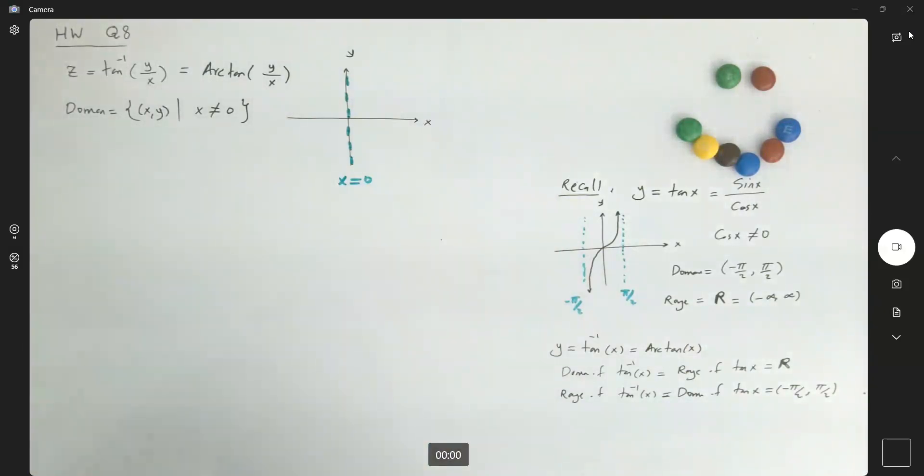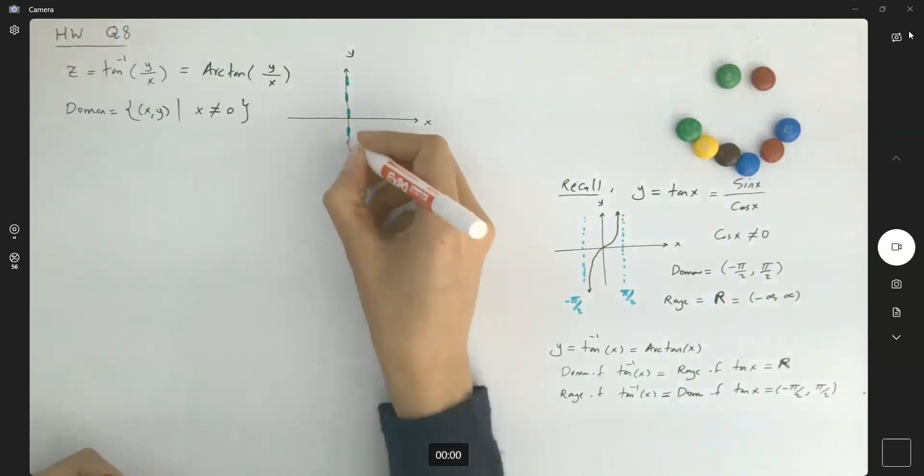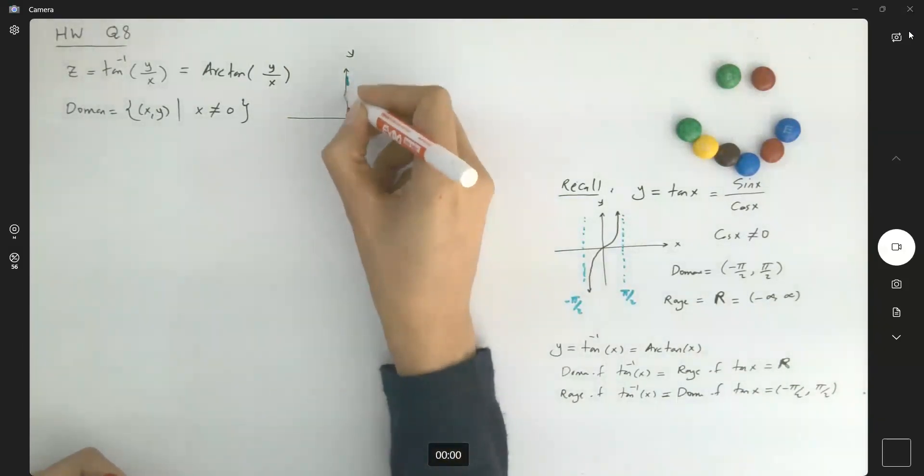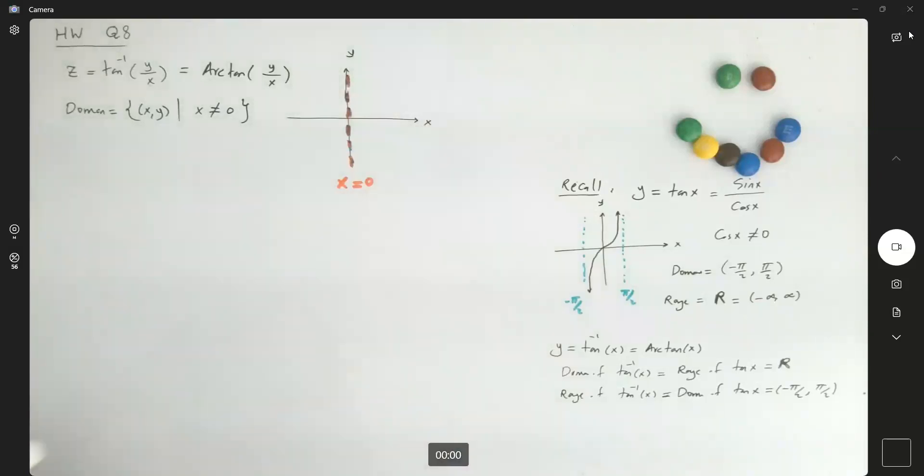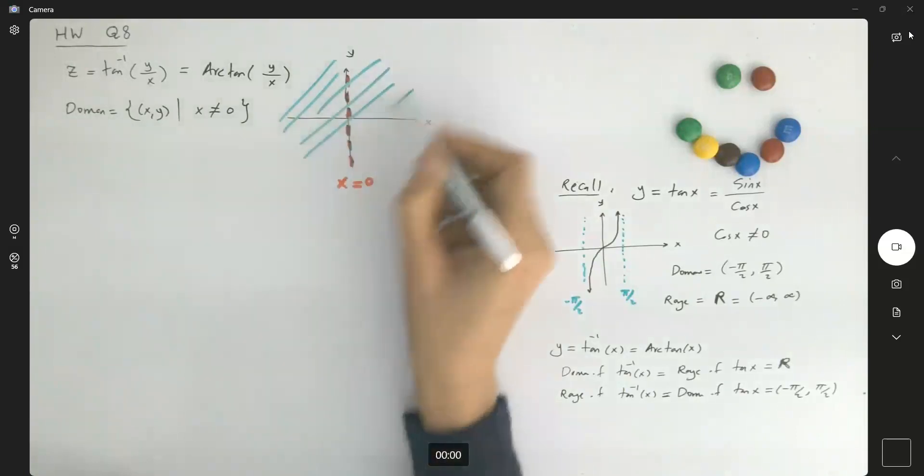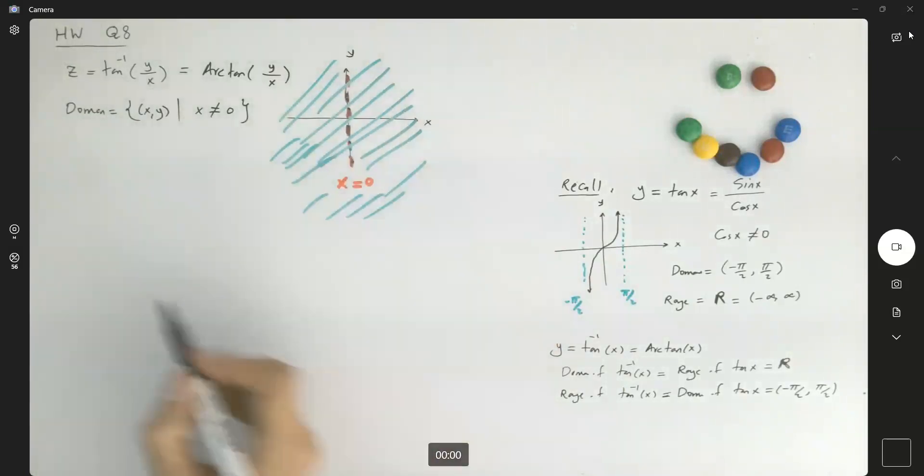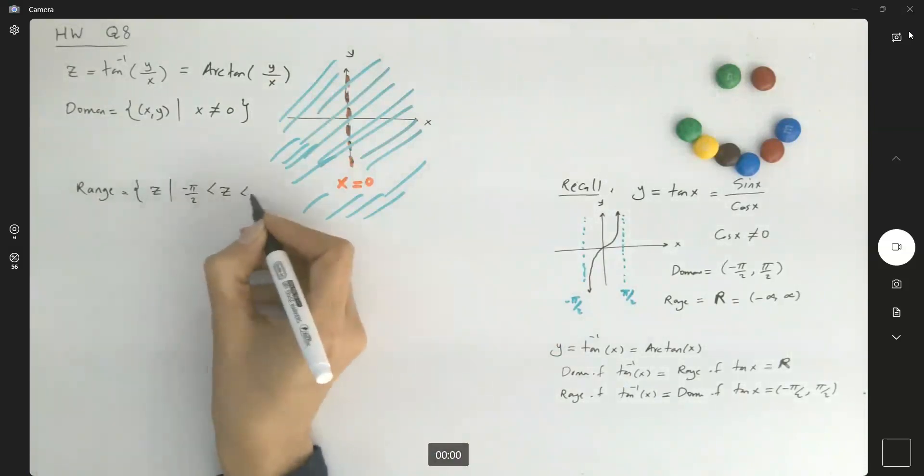The domain is everything except for this line. Let me use a different color for this. And then the domain in green. So here you have the domain of inverse tangent of y over x. What about the range? The range is going to be all z values such that z is sandwiched between negative pi over 2 and pi over 2.